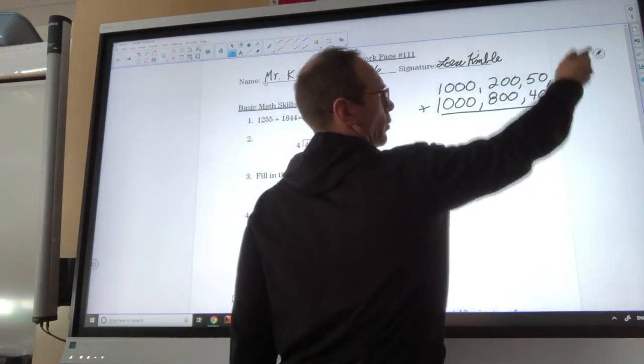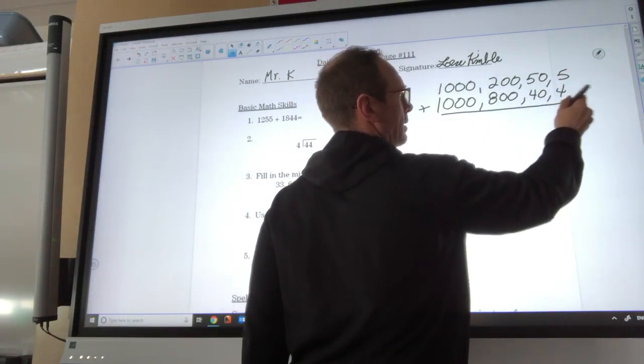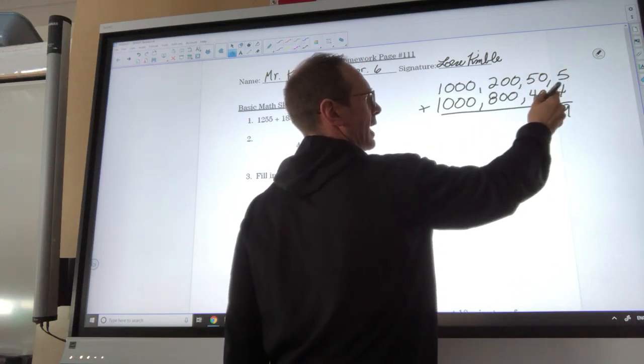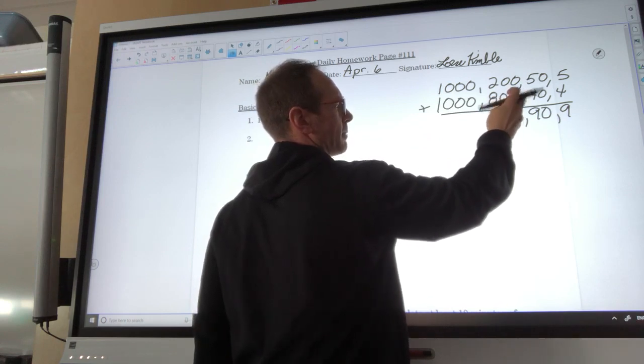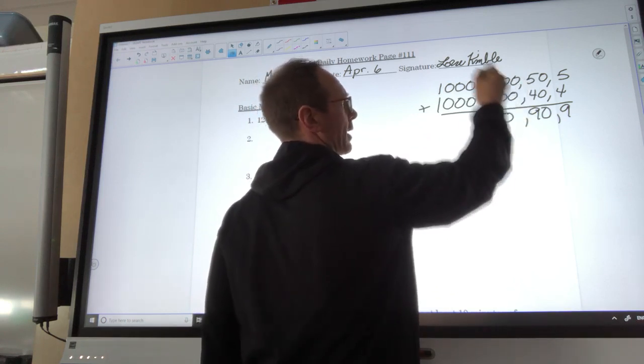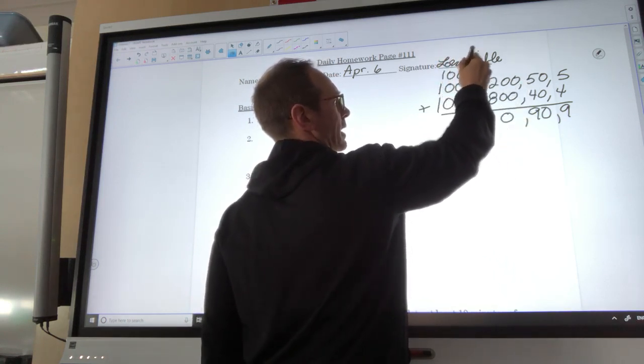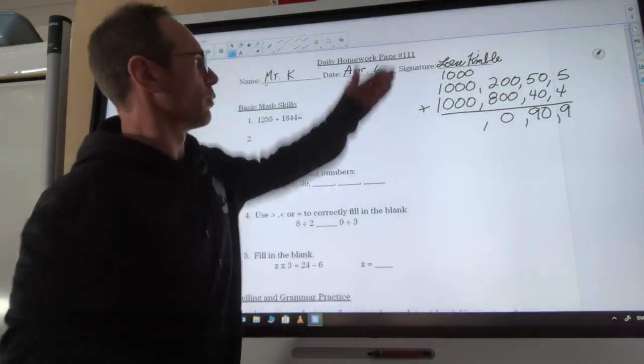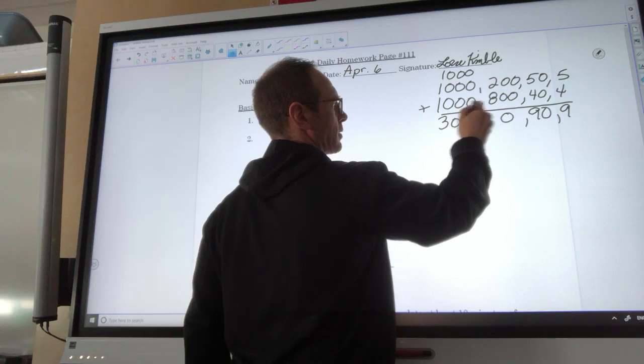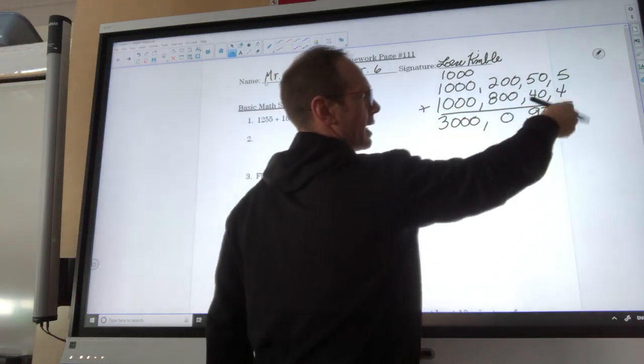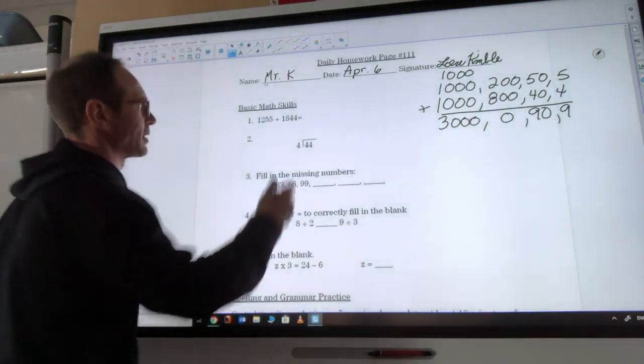So I'm going to start over here with the ones place. I got 5 plus 4 is 9. I have 50 plus 40, that's 90. 200 plus 800, that's a thousand. But I'm just going to actually put a zero here. I'm going to carry that thousand over to here because that's really where I want it. And then 1,000 plus 1,000 plus 1,000 is 3,000. So we have 3,099. So our answer is 3,099.